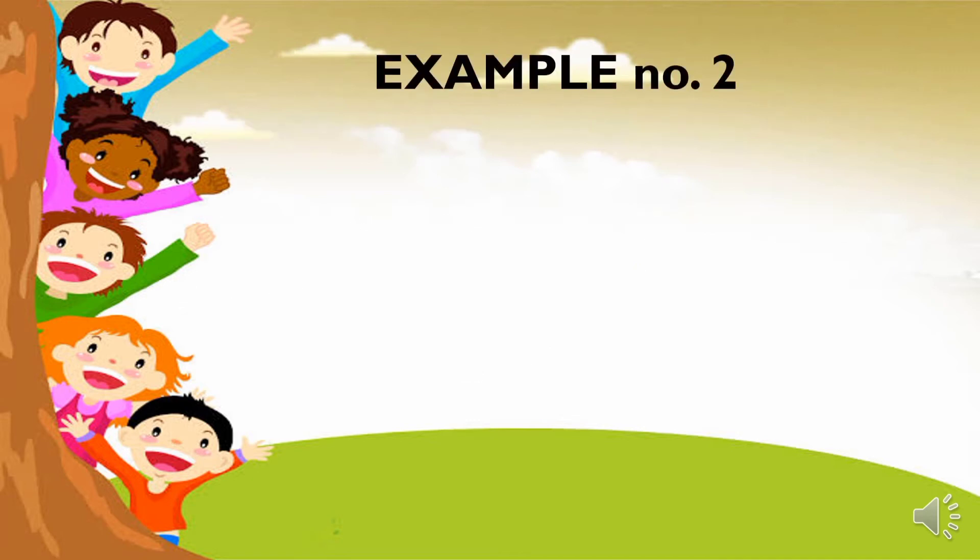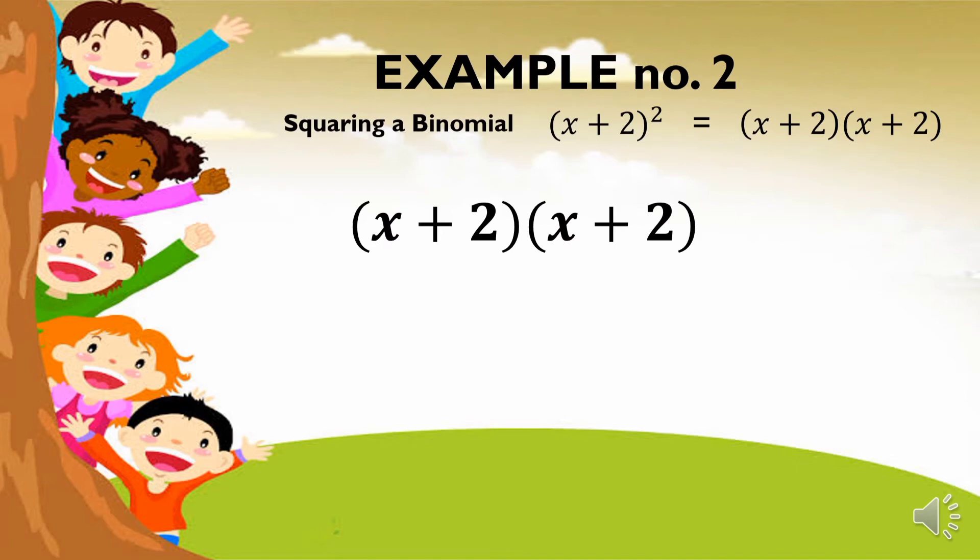Let's have another example in squaring a binomial. We have here x plus 2 squared or x plus 2 times x plus 2. x times x is equal to x squared. x times 2 is equal to 2x. 2 times x is equal to 2x. And 2 times 2 is equal to 4. Adding the like terms, we will get an answer of x squared plus 4x plus 4.